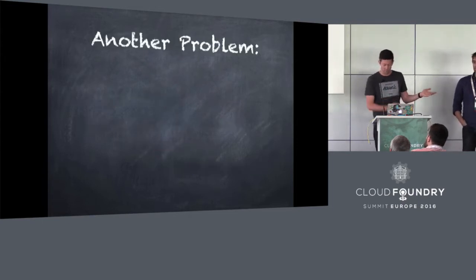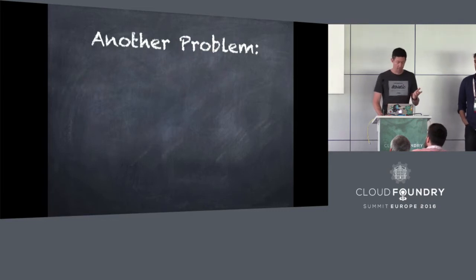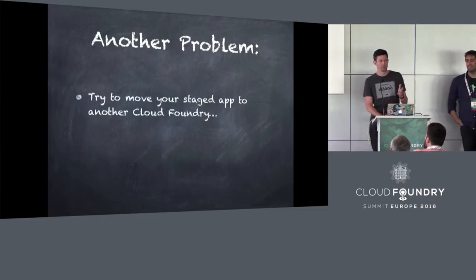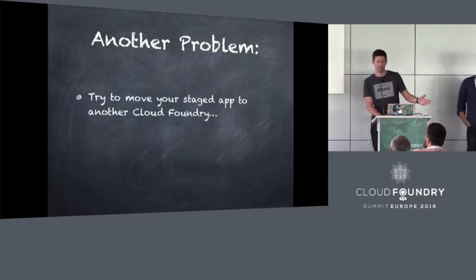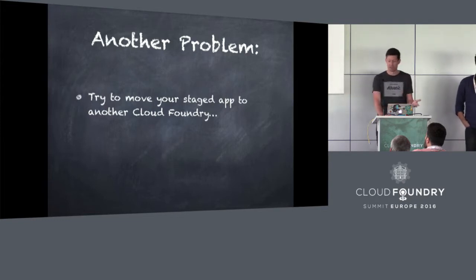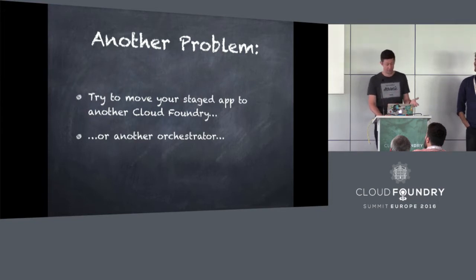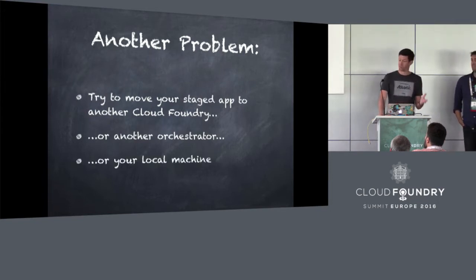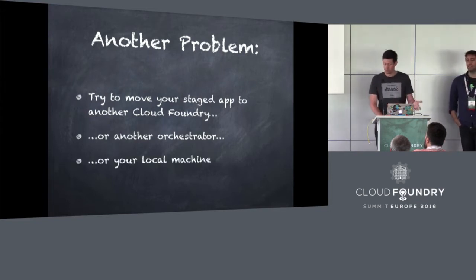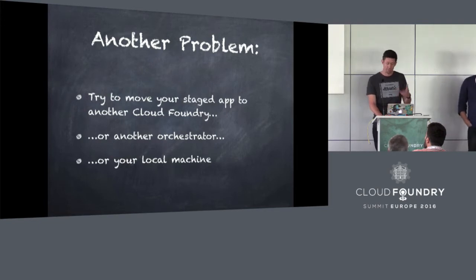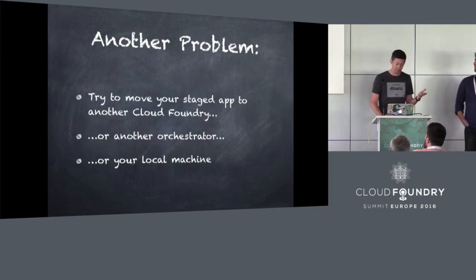Instead of taking a droplet, you need to have a delta of the whole file system. Let's talk about a separate problem: what if you want to move your app, having staged it, to a different Cloud Foundry without restaging? Or what if you want to move it to another platform or another orchestrator, or maybe just run it on your local machine?